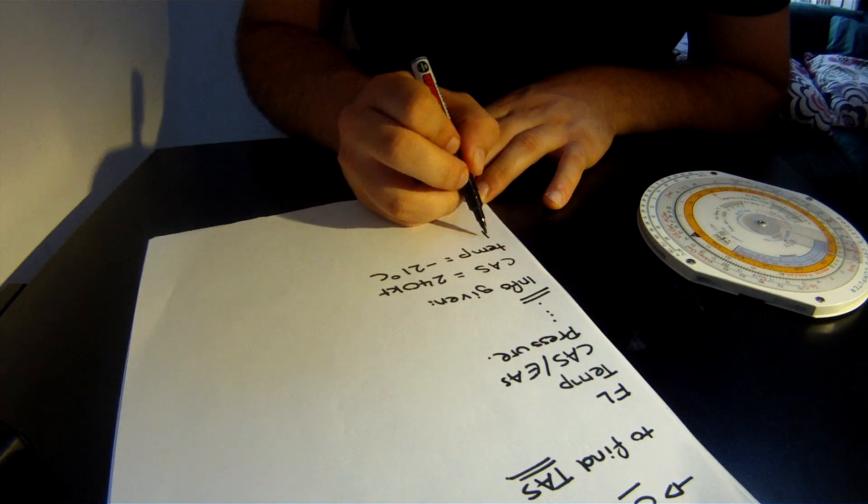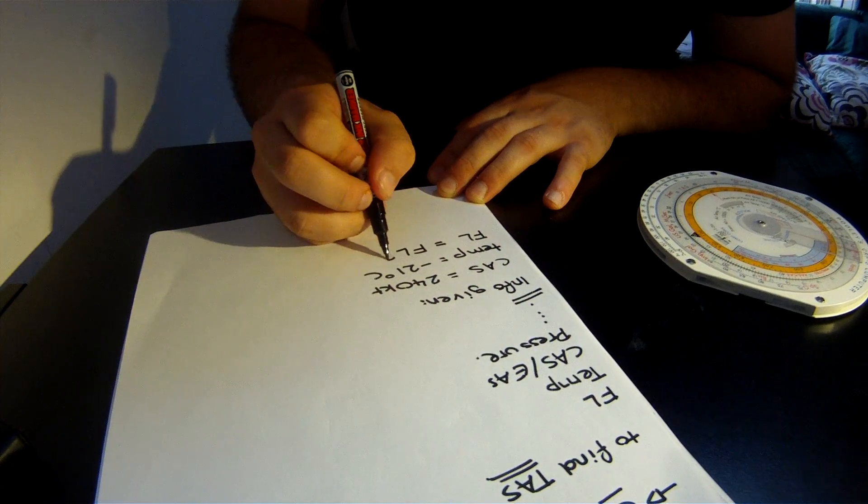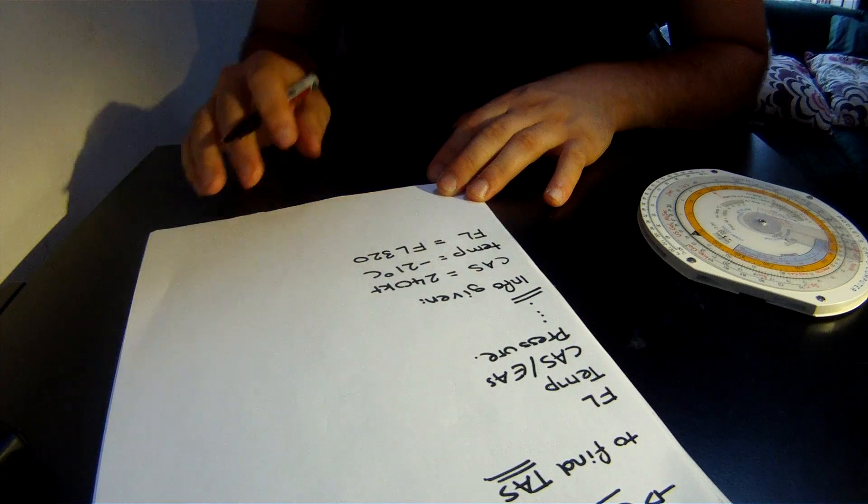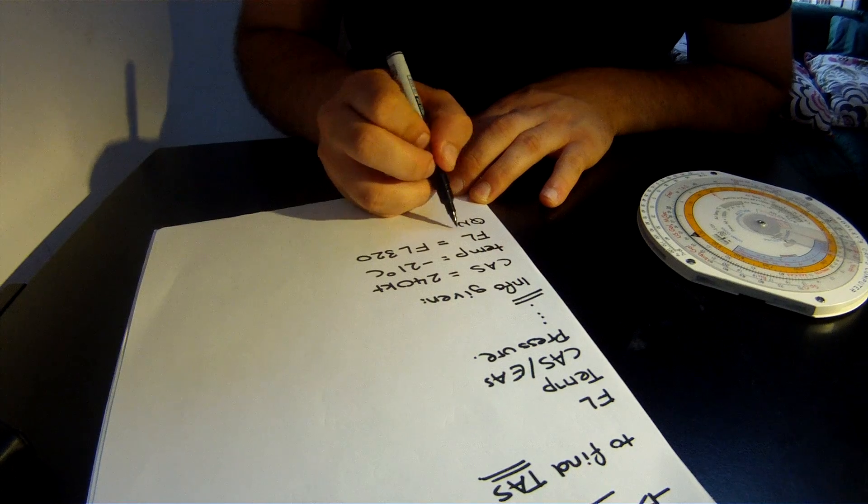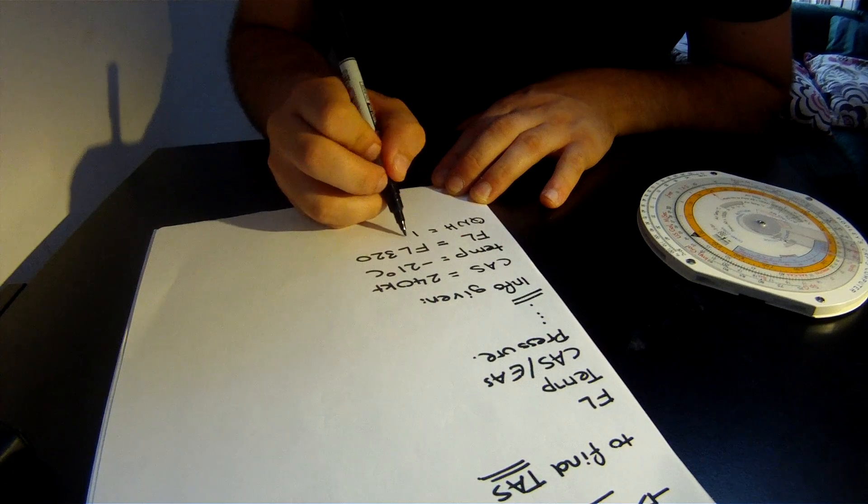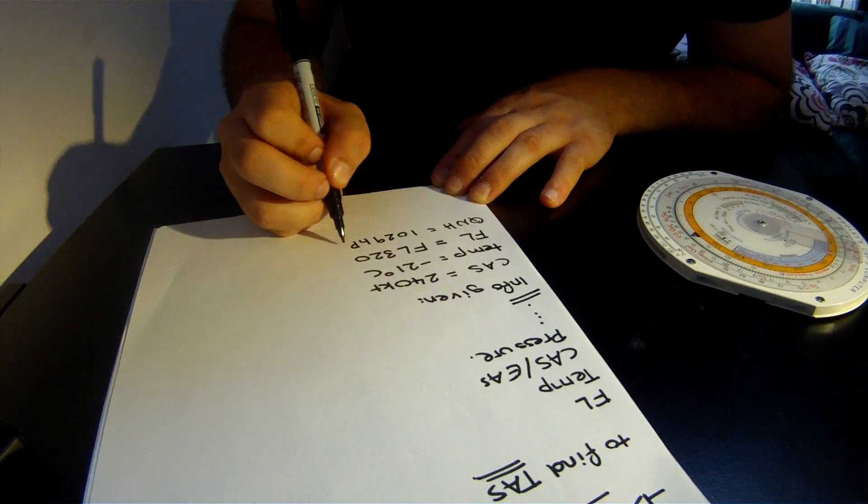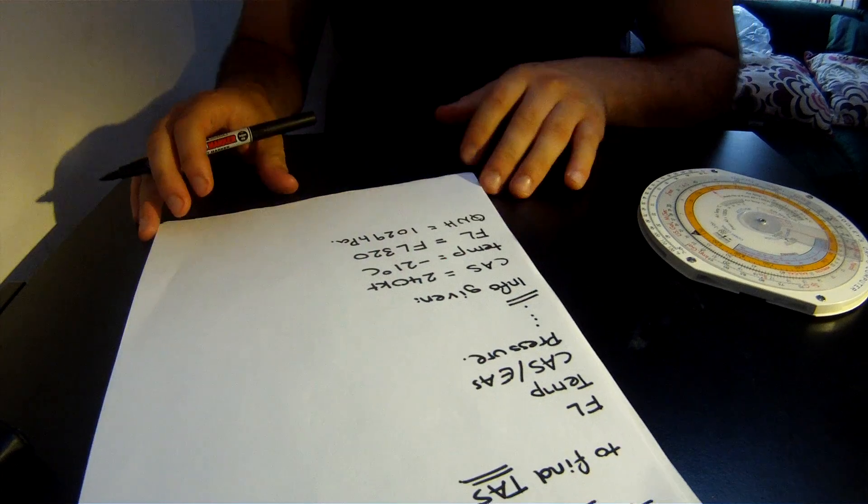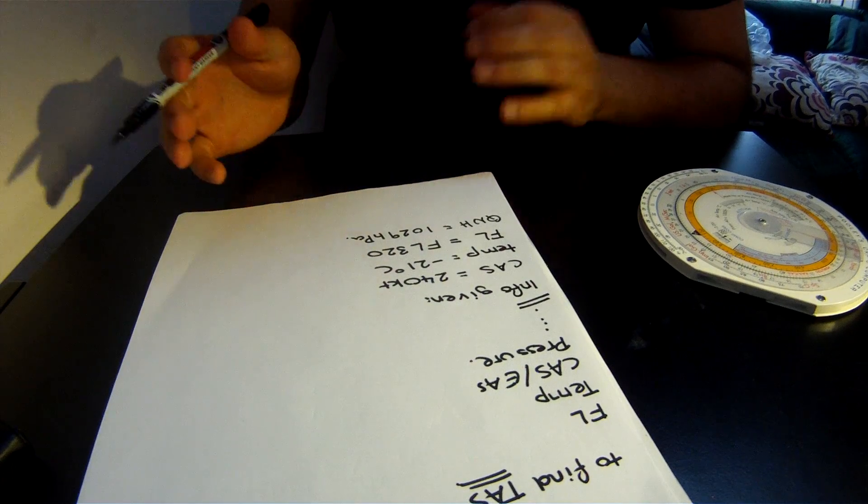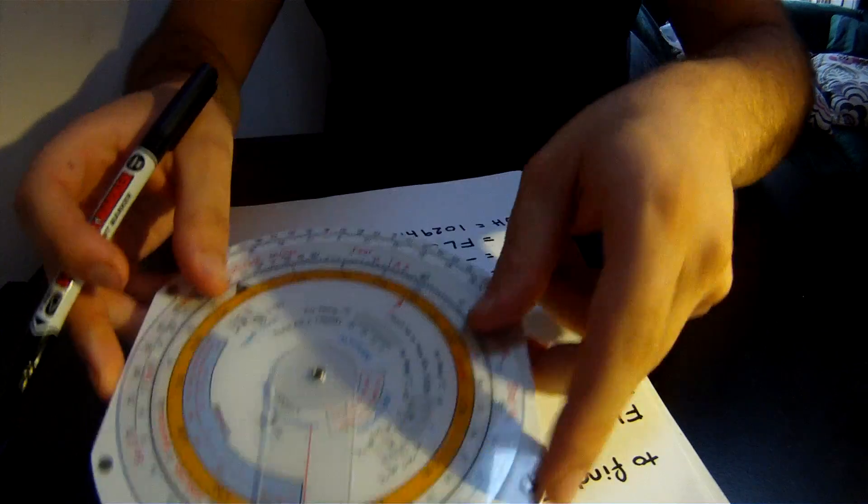We have the flight level we're currently cruising at is flight level 320, and we have the QNH at the airfield nearby being 1029 hectopascals. Now this last bit of information you don't actually need—they'll do something like that just to confuse you.